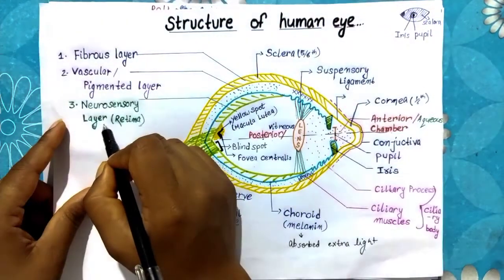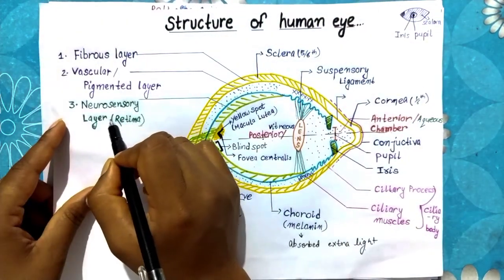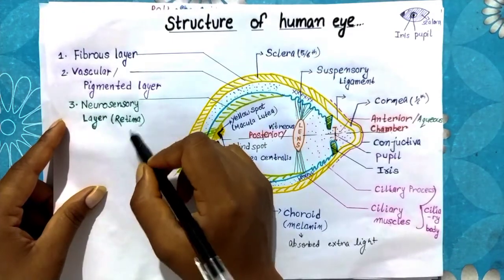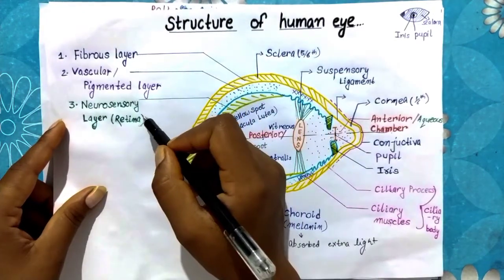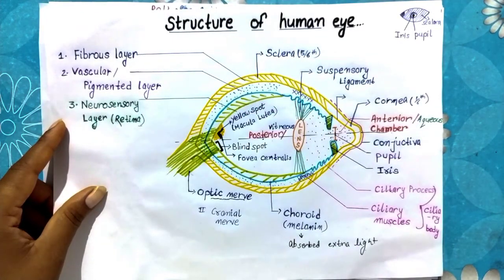The second layer is vascular or pigmented layer, because pigment is present in them. And the third layer is the neurosensory layer, and most of the neurosensory layer is the retina. Now we need more detail to understand the mechanism of vision.